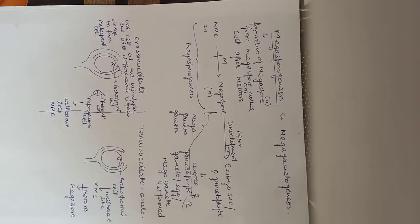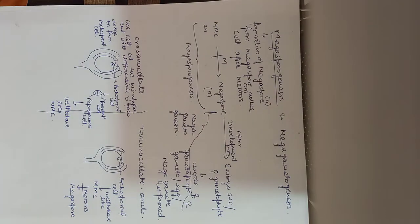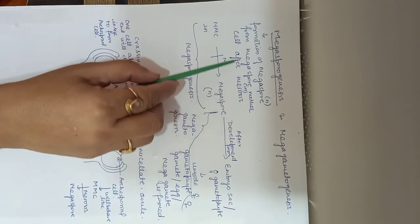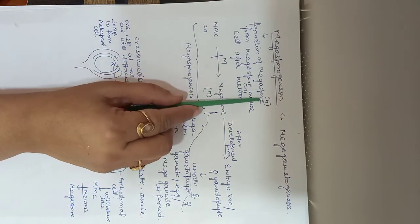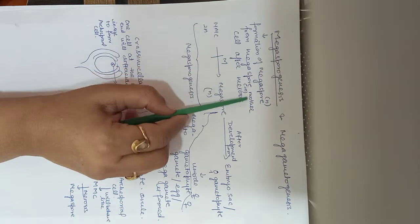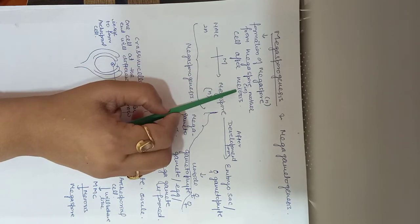Hello students, today we will start with the topic megasporogenesis and megagametogenesis. Megasporogenesis is the formation of megaspore from megaspore mother cell — specifically, formation of megaspore which is haploid from megaspore mother cell which is diploid, through meiosis.